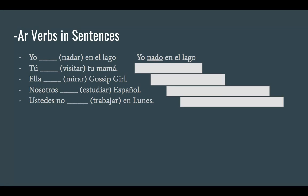Now we're going to conjugate 'visitar' in the tú form. Visitar minus the AR is 'visit'. The ending for tú in the AR form is 'as'. So visit plus as gives us 'visitas'. Tú visitas a tu mamá — you visit your mom.